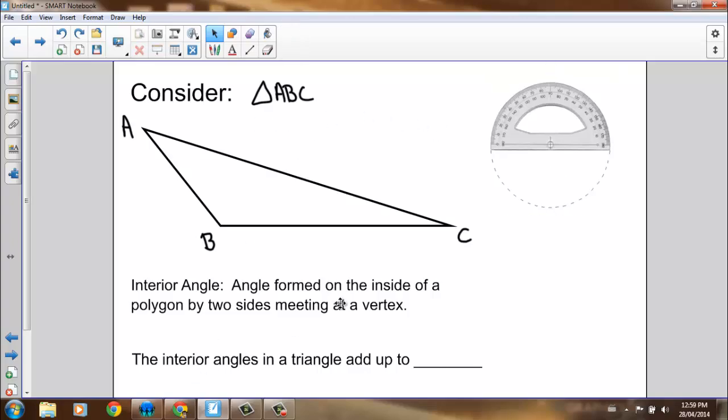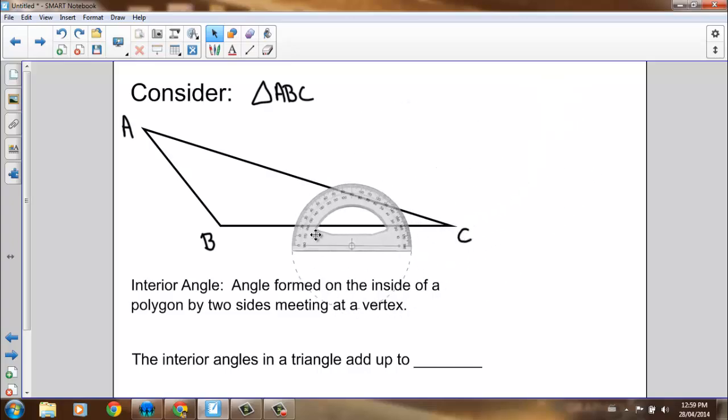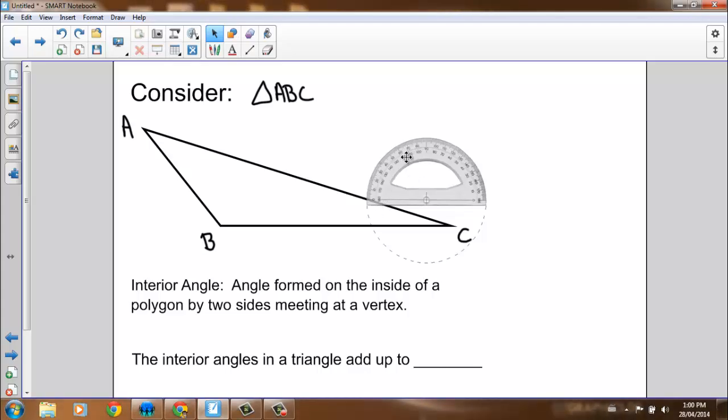If I want to measure the interior angles in this triangle, I have a protractor here that I can use. What I'd like you to do at home is download a protractor app for your smartphone, draw your own triangle, any kind of triangle that you want. Use the protractor app on your phone, see if you can figure out how to use it, and measure the interior angles in your triangle.